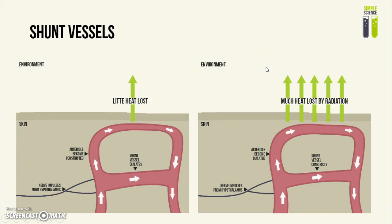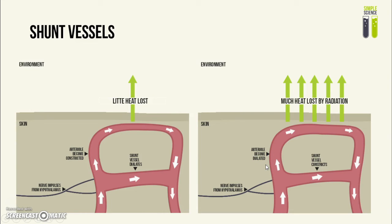In a hotter environment, the arterioles dilate and the shunt vessel constricts, so less blood flows through the shunt vessel and instead flows through the bed of capillaries. This means more blood flows into the sweat glands and skin capillaries, increasing heat loss by radiation, convection, or conduction. One of the key functions of shunt vessels is to dilate or constrict in order to regulate blood flow to the skin capillaries in thermoregulation.